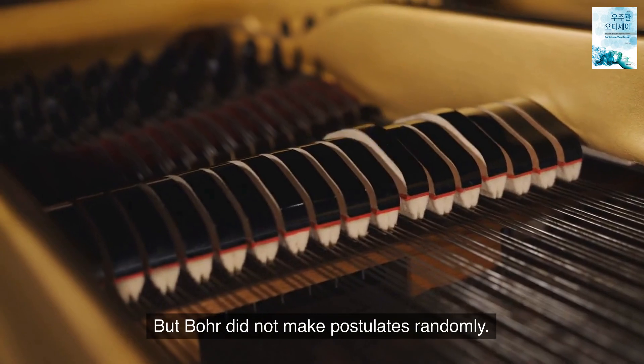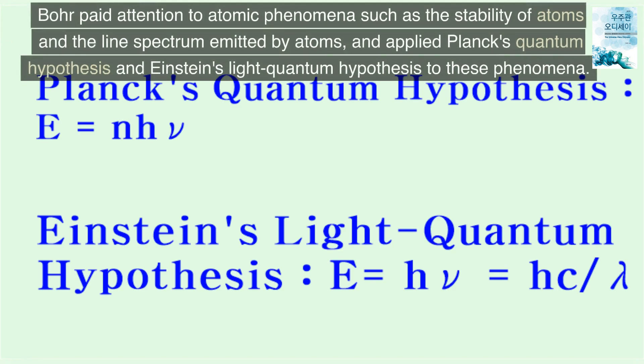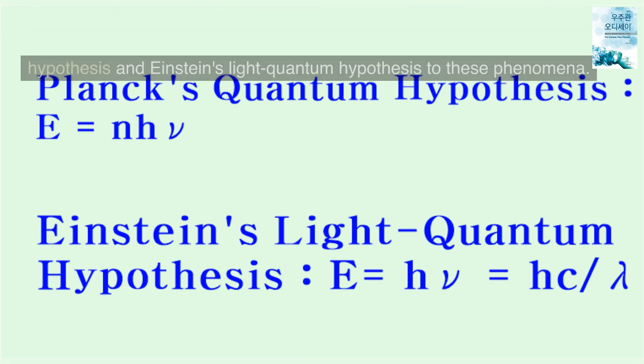None of these assumptions of Bohr can be derived from classical physics. But Bohr did not make postulates randomly. Bohr paid attention to atomic phenomena such as the stability of atoms and the line spectrum emitted by atoms, and applied Planck's quantum hypothesis and Einstein's light quantum hypothesis to these phenomena.